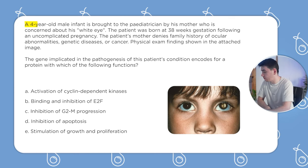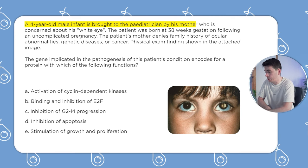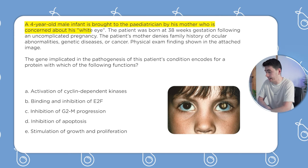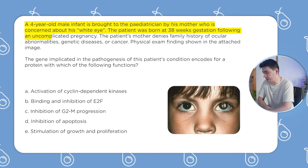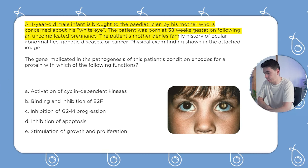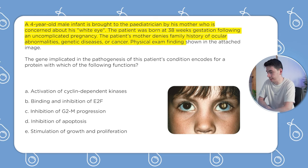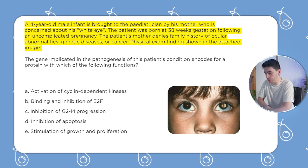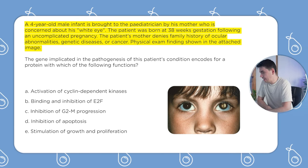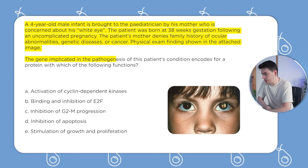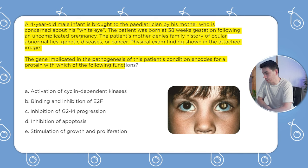We have a four-year-old male infant that was brought to the pediatrician by his mother who is concerned about his white eye. The patient was born at 38 weeks gestation following an uncomplicated pregnancy. The patient's mother denies family history of ocular abnormalities, genetic diseases, or cancer. Physical exam finding is shown in the attached image — the patient has a white pupil. The question asks: the gene implicated in the pathogenesis of this patient's condition encodes for a protein with which of the following functions?